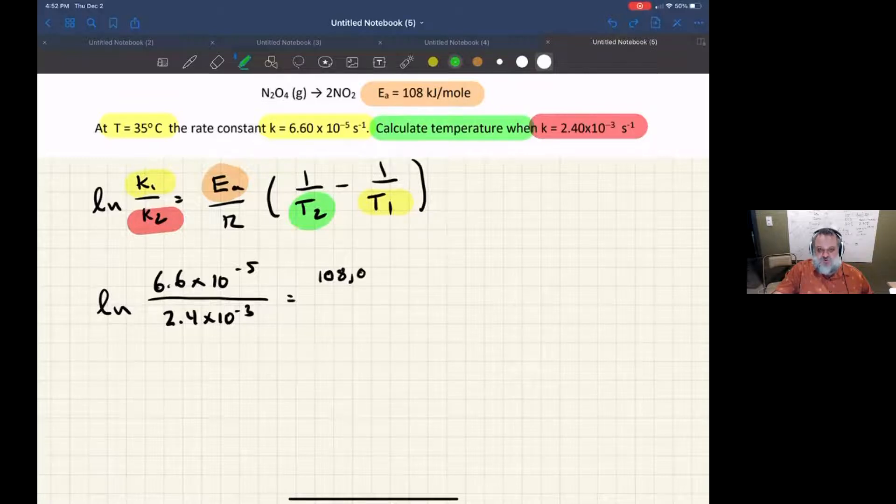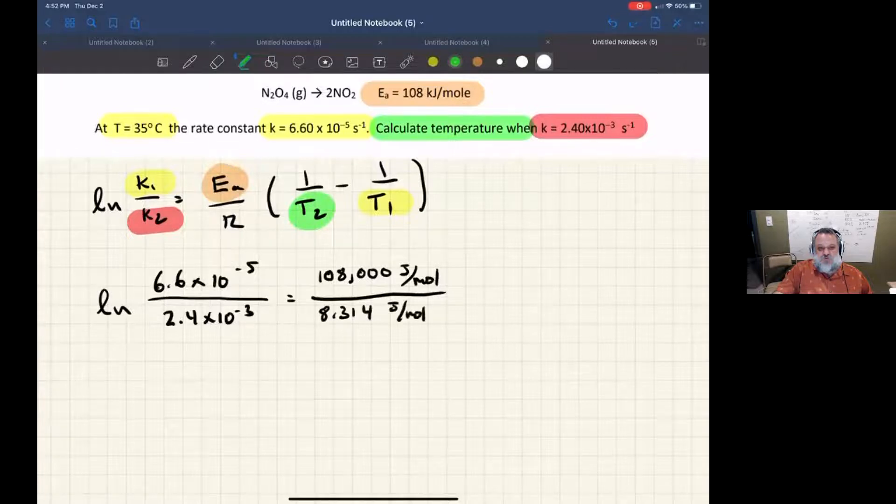My activation energy needs to be converted to joules because that's the unit of the gas constant. So joules per mole for the activation energy. And then the gas constant, 8.314 joules per mole Kelvin.